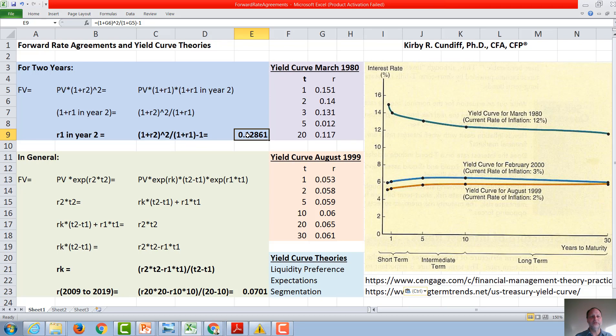If we use this, and in particular, we apply it to the yield curve in 1980, we would get G6 right here for our two-year rate, and G5 right here for our one-year rate, and we would take (1+this)² divided by (1+this) minus one, and we would get 12.8%.